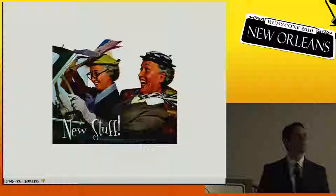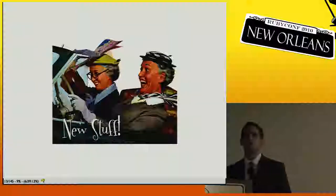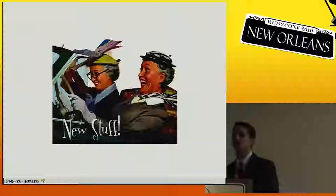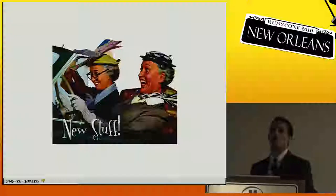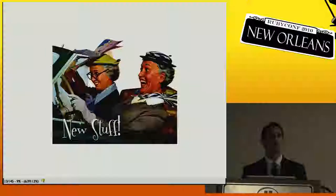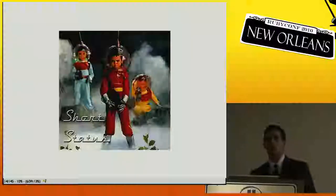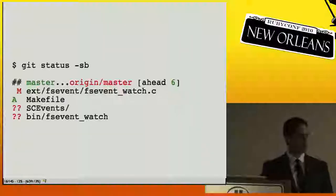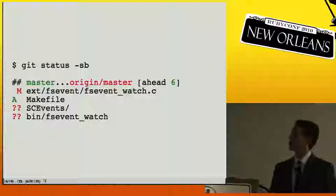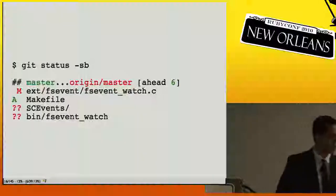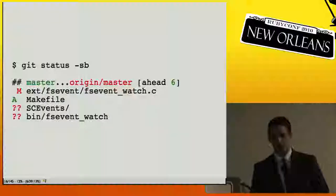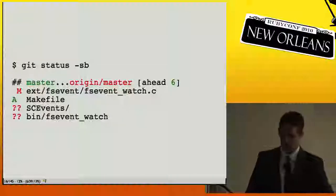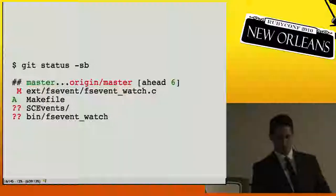I want to go over a couple of new things introduced in Git recently — things you may not know about if you're still on an older version. First, short status: if you say `git status -s`, Git will give you a Subversion-style output rather than the long-form output that `git status` normally gives.